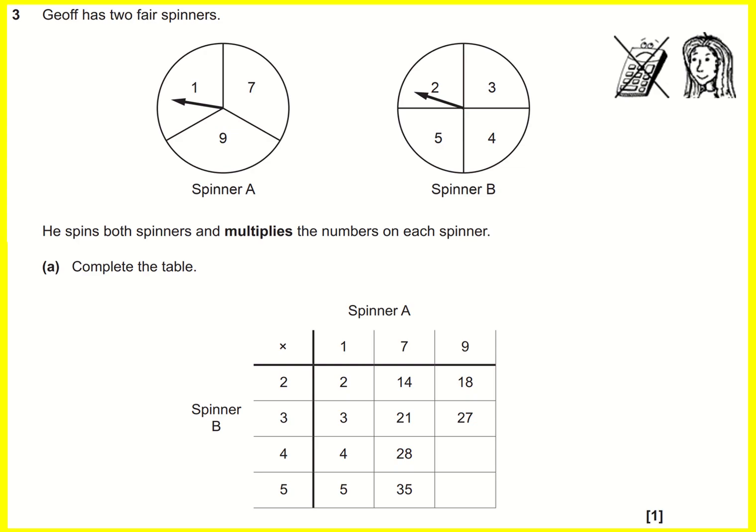In this question we've got two spinners, and we're spinning spinner A, spinning spinner B, and multiplying whatever we get as the answer. So to complete the table we just need to do 4 times 9 here to give us 36.